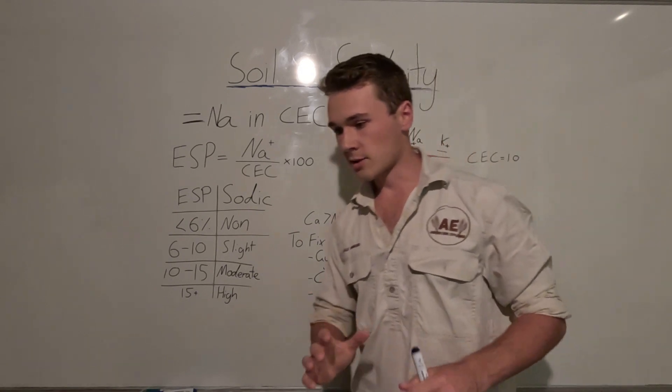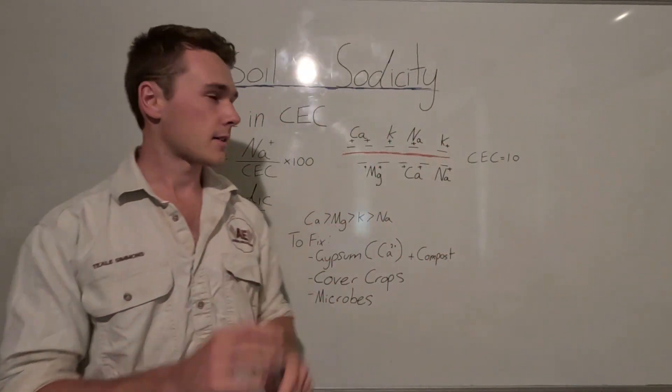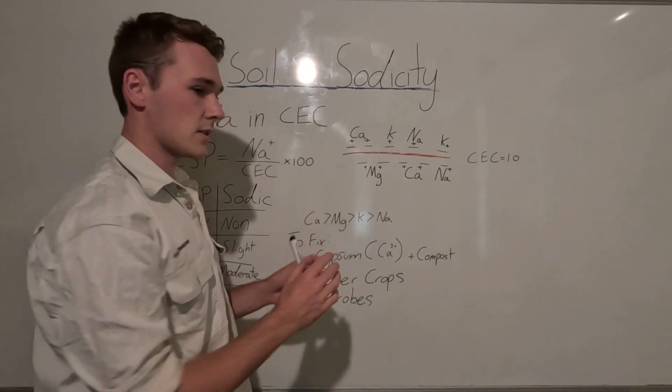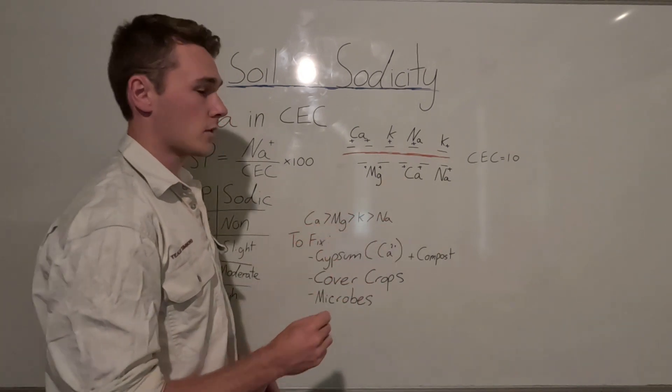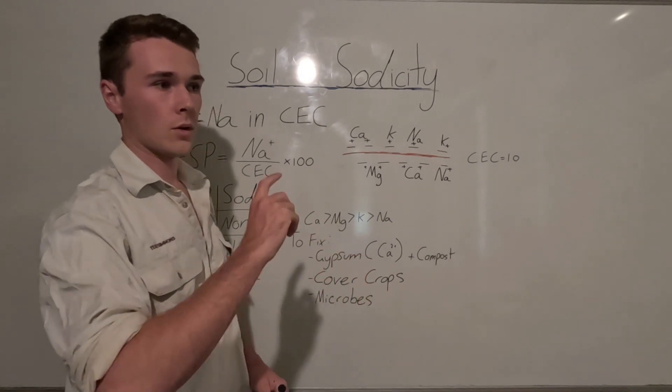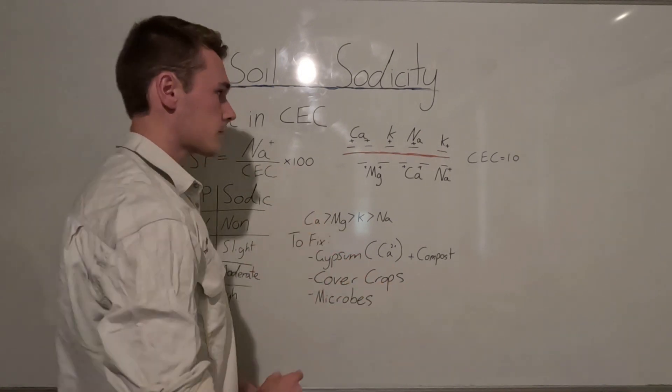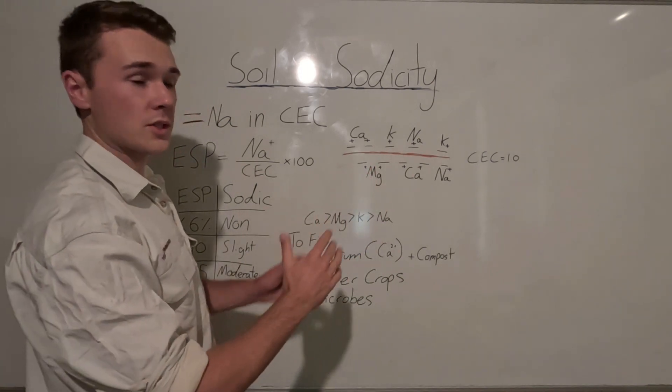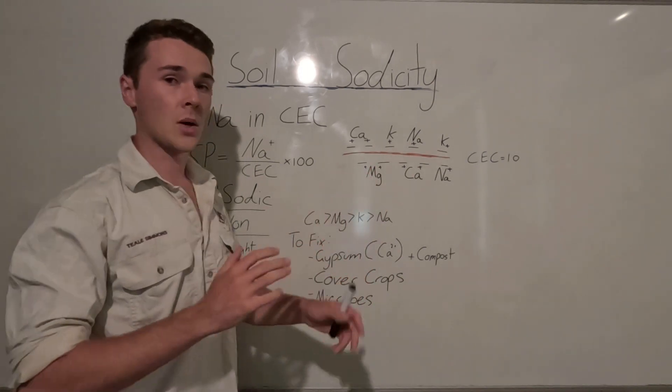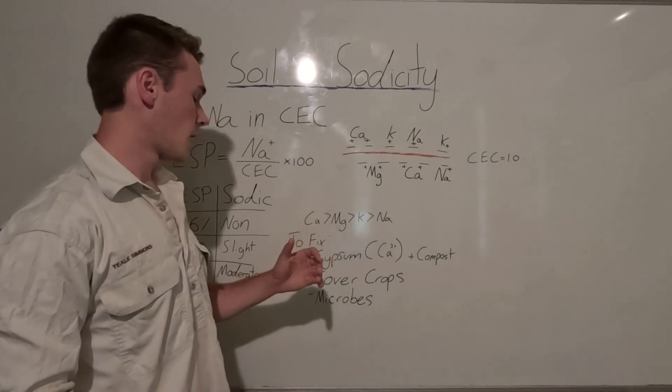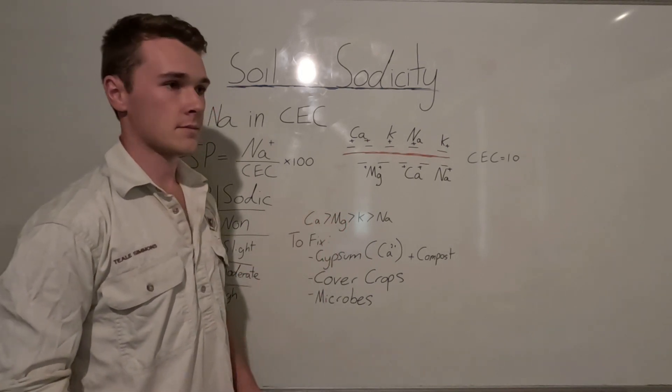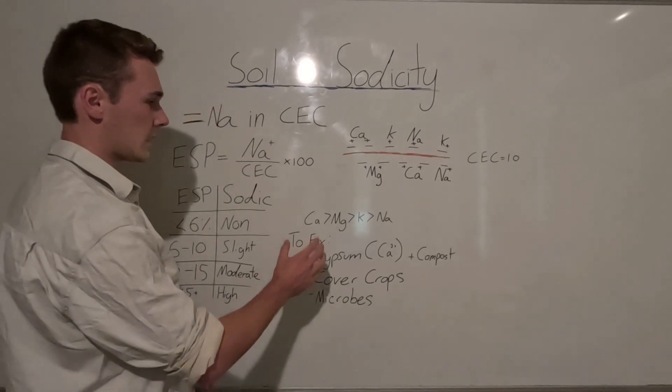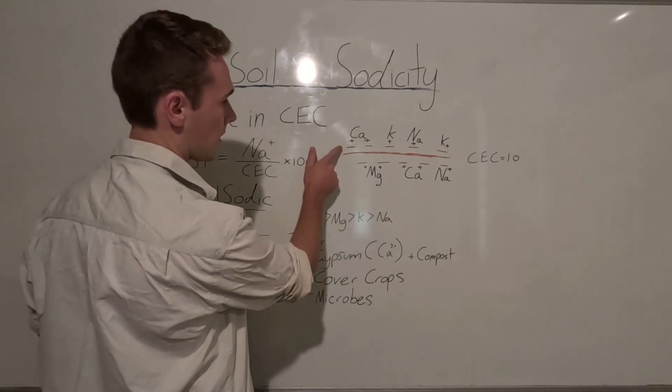So what does this actually look like in terms of our soils? When we have our soil colloid, which is the negative binding sites within our soils that can be our clays or organic matter, these colloids have negative binding sites which our minerals can bind to. So these minerals include calcium, magnesium, potassium, and our sodium.